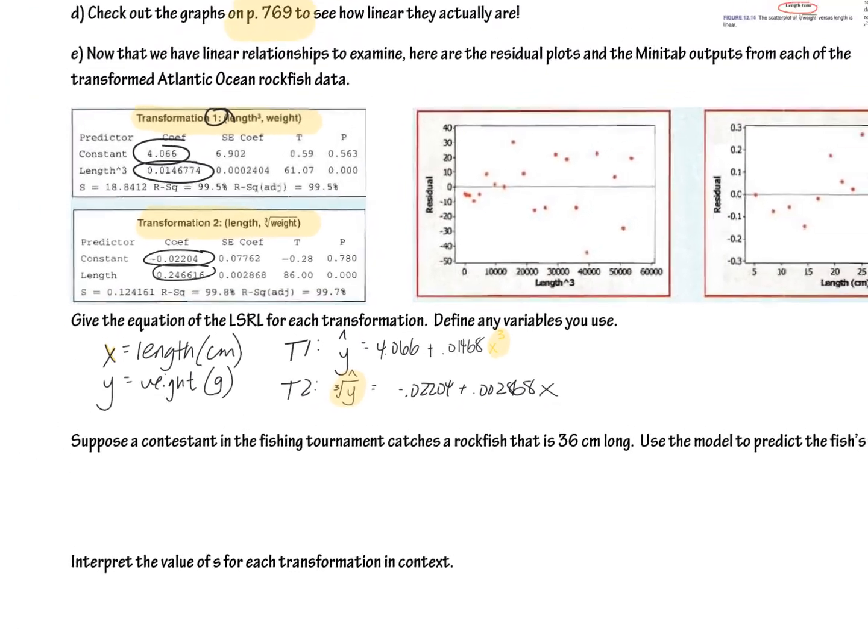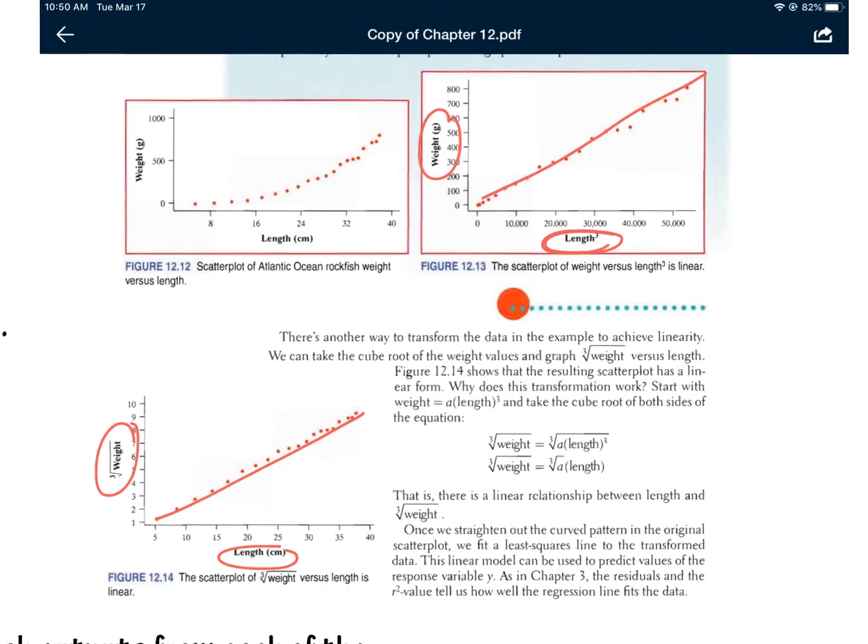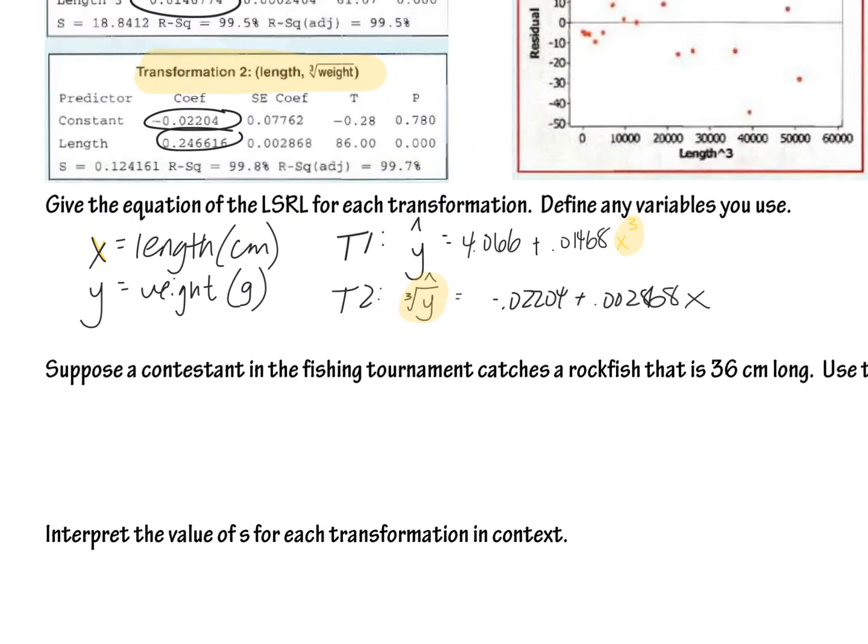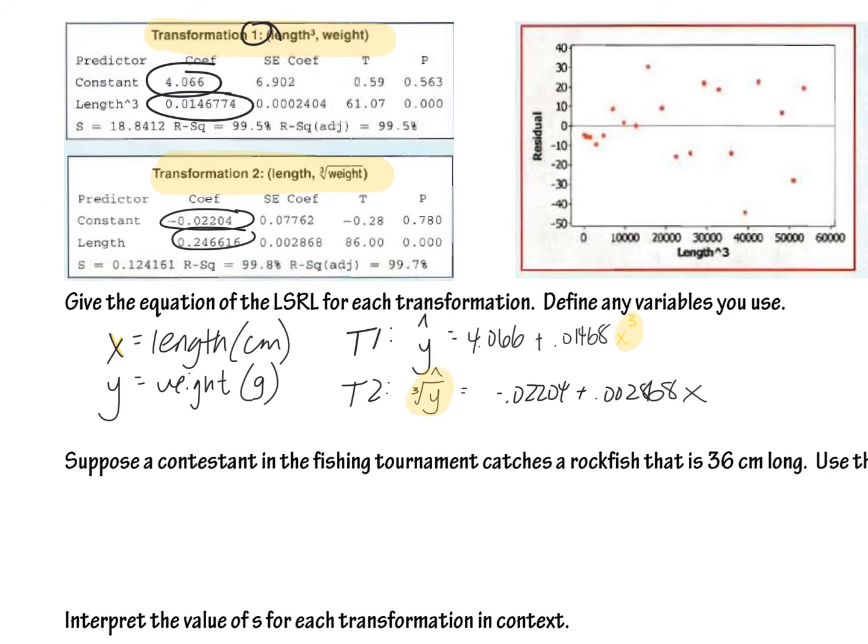So in this case, both of those were really straight. Remember, go back up to the textbook. When I straightened all of those out by either cubing the length or cube rooting the weight, that needs to be reflected in your equation of the LSRL. So that is why we have a little bit of a slightly different equation here. We have an x cubed for the first transformation, and that is just because we cubed all of the x's. And then our second transformation, we cube rooted all the y's, and so that's why instead of y, I'm writing cube root of y, and I still have a hat over it because it's still a prediction. It's still the best fit line. Even though those dots were really close to it, we're not going to predict 100% accurately every single time.